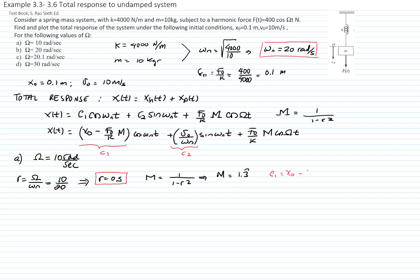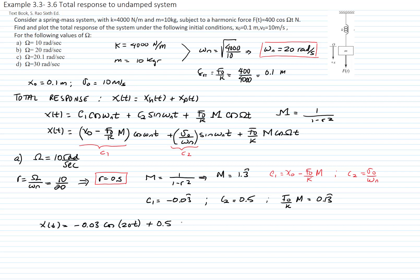C1, which is the initial displacement minus (F₀/k) times the amplification factor, is found to be 0.03333 (repeating), and C2 = x-dot₀/ωₙ = 0.5. The amplitude of the particular solution is 0.1333 (repeating). This gives the total solution: 0.03333·cos(20t) + 0.5·sin(20t) + 0.1333·cos(10t), all in meters.